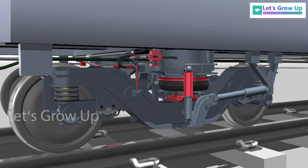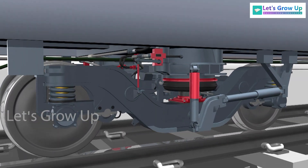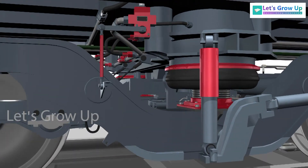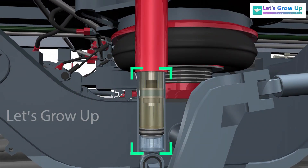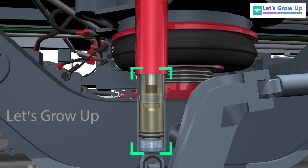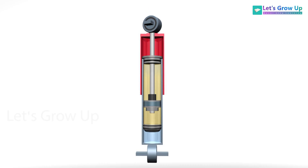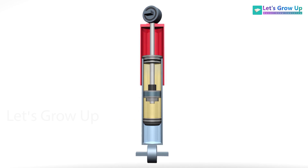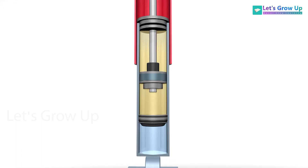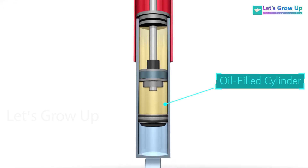When a train is running on the track, different types of forces are transmitted to the bogey suspension. The damper absorbs the forces and vibration. As the shock absorber is an oil-filled cylinder, the thermal energy is dissipated by the hydraulic fluid, which allows the suspension to move.